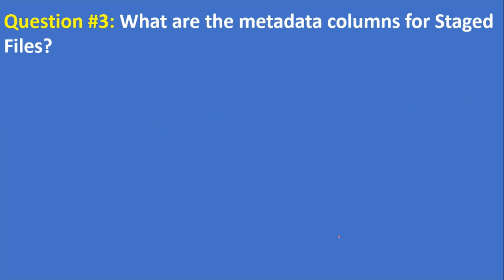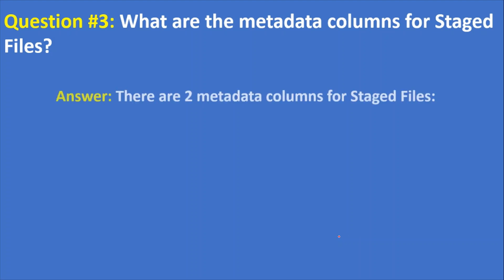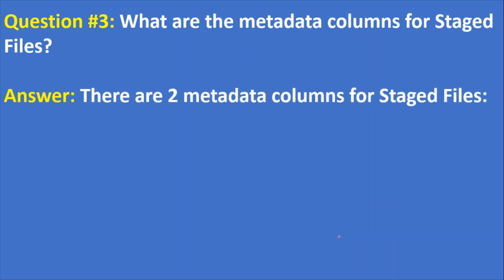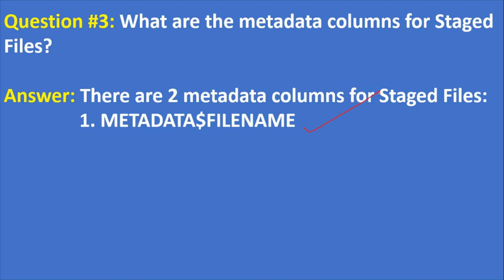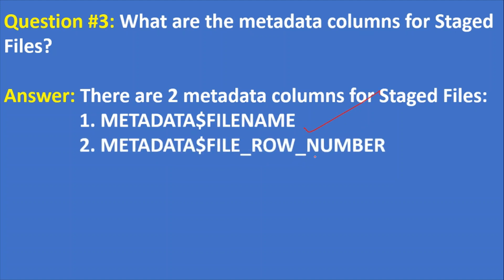Next question: what are the metadata columns for staged files? The answer is there are two metadata columns for staged files. One is METADATA$FILENAME. The second one is METADATA$FILE_ROW_NUMBER. These are the two metadata columns available for staged files. Note that staged files means internal or external stage. These columns can be used as part of the COPY command if you want to store additional columns into your table.